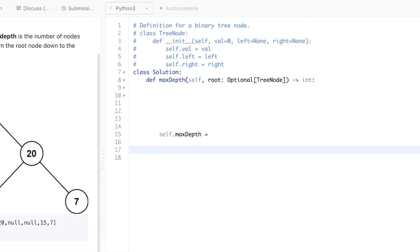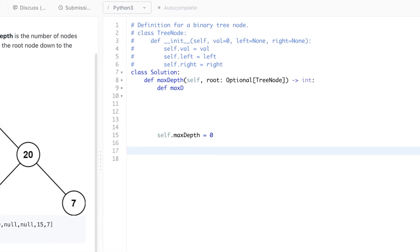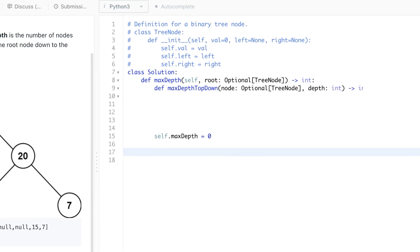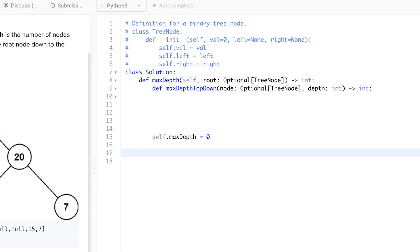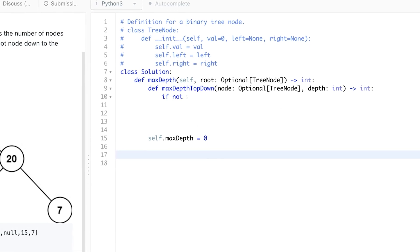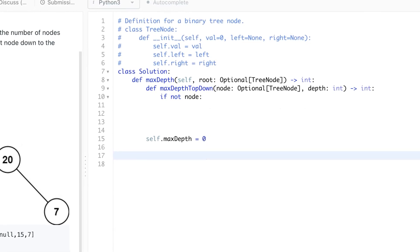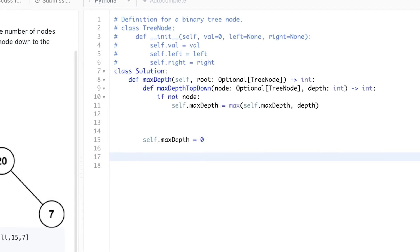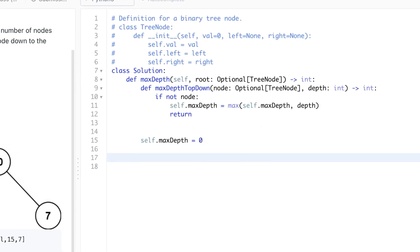We define a max depth variable that we already discussed. Then, we define a max depth function that traverses all the paths starting at the root node and keeps track of the depth. It checks if the node exists. Or in other words, if the node is null or none, depending on the language you are using. And if it is null, we have reached the end and we update the max depth if needed and return.